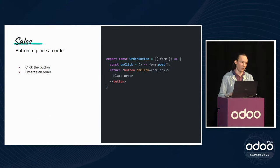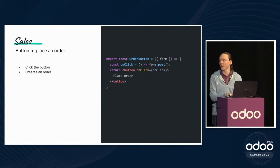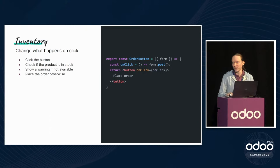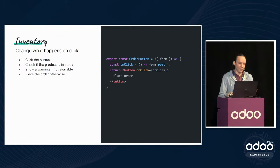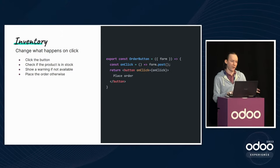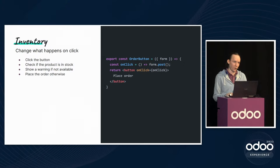Odoo is an ERP with a sales module that lets you place orders. Here's a tiny React function component — a button that creates an order on click. The problem is Odoo also has an inventory management module that needs to integrate tightly with this. We want to change what happens on click without rewriting existing sales module logic. In inventory, we want to check if the product is in stock before allowing an order — show a warning and stop if it's not.